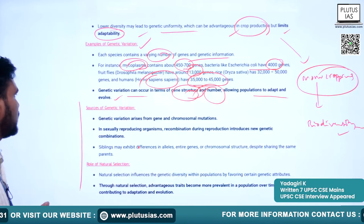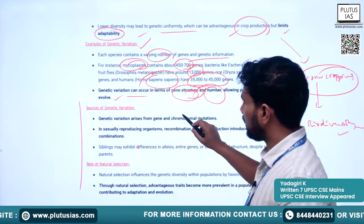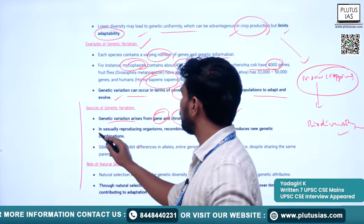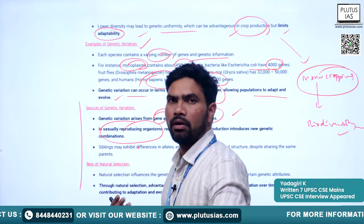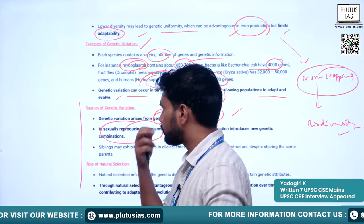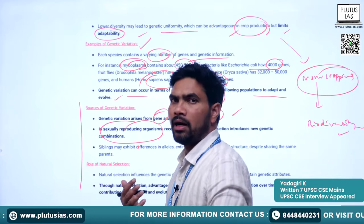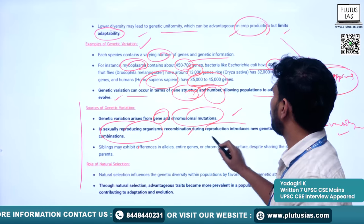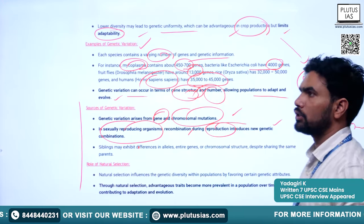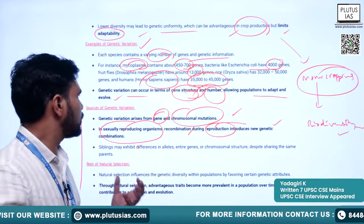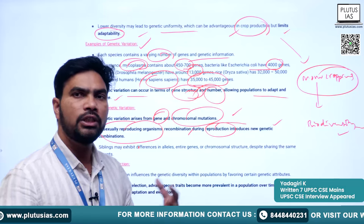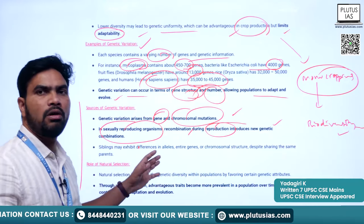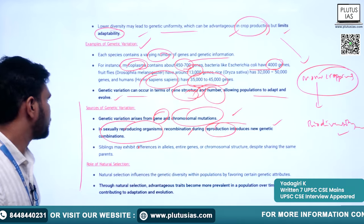Genetic variation arises from gene and chromosomal mutations. In sexually reproducing organisms such as vertebrates and humans, recombination during reproduction introduces new genetic combinations. When genes from both mother and father combine, they produce new genetic combinations, thereby improving genetic diversity.